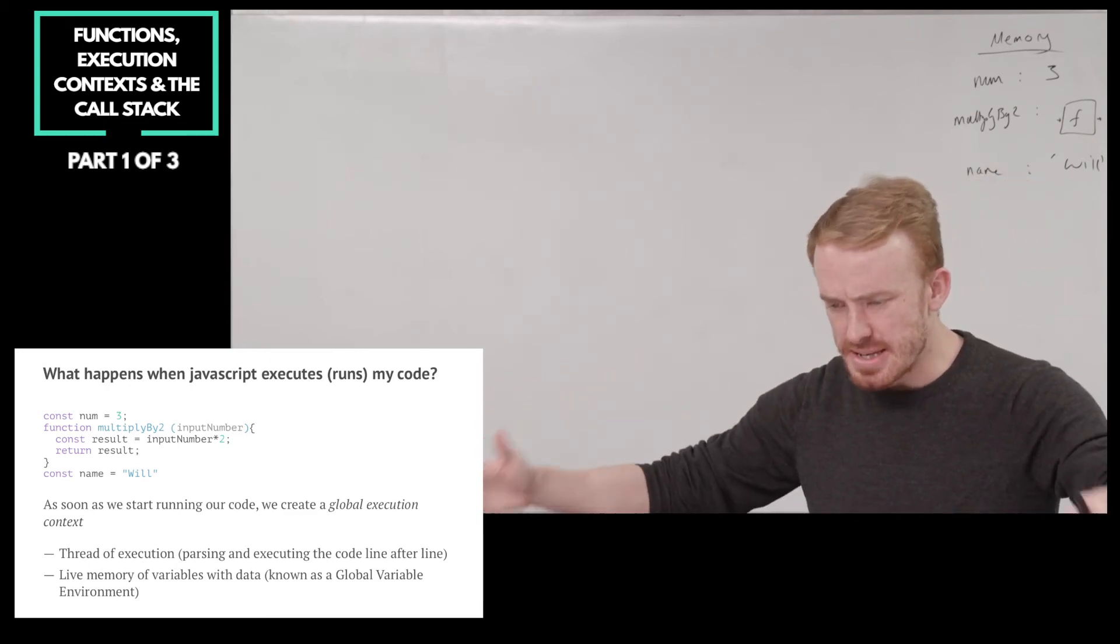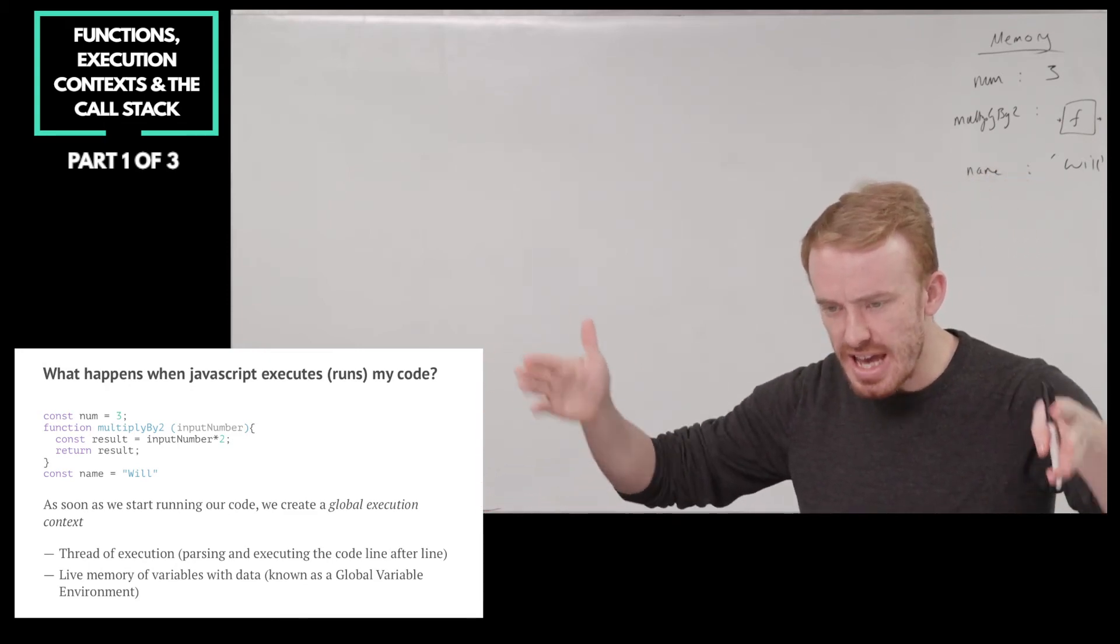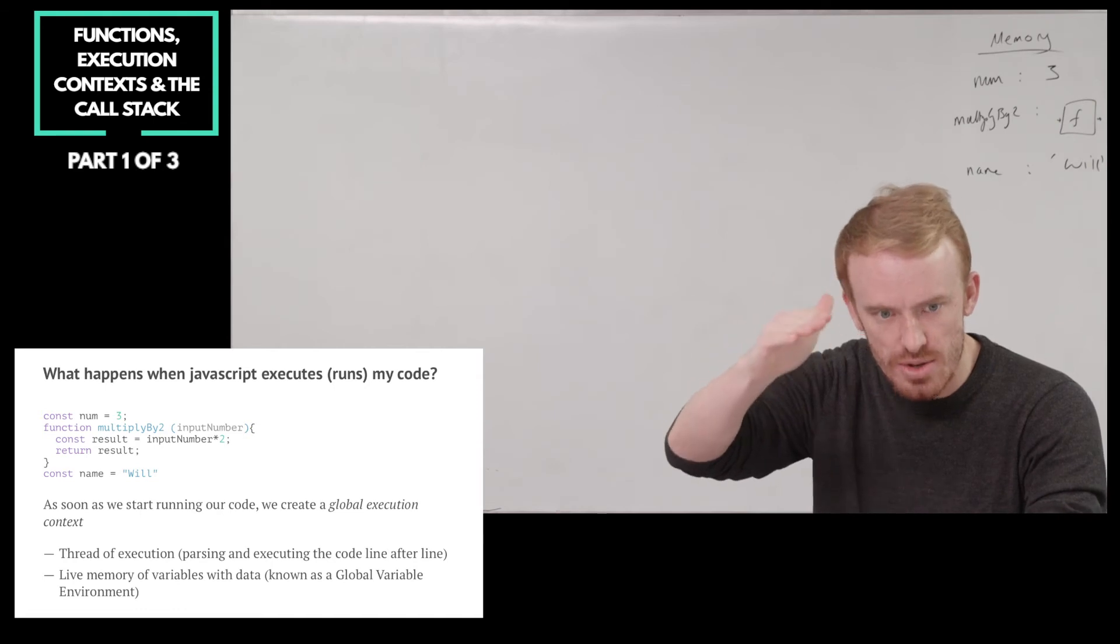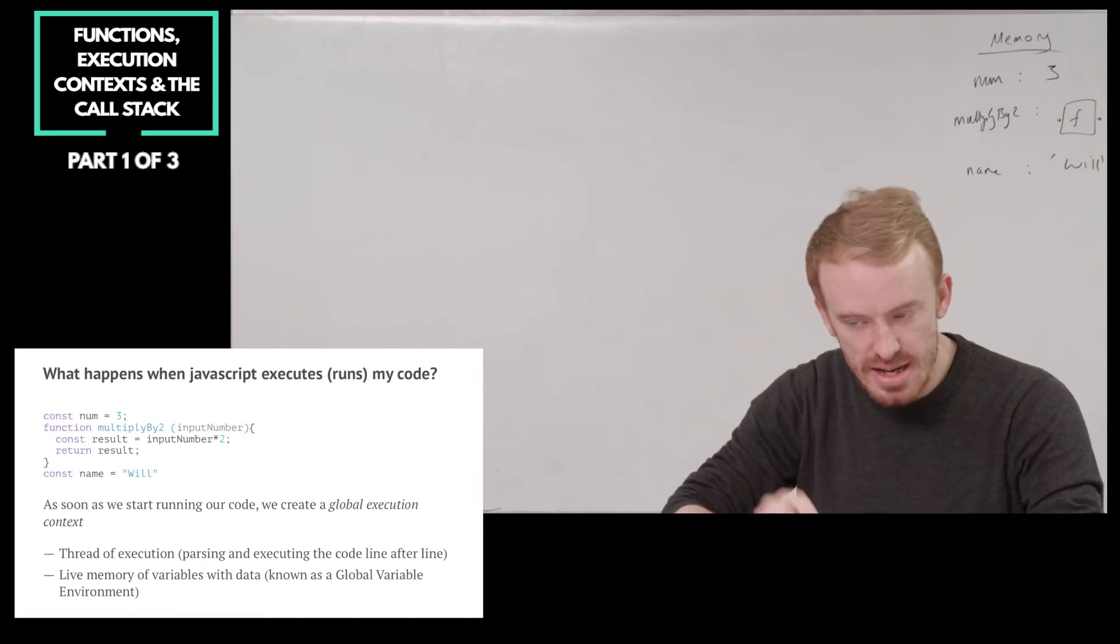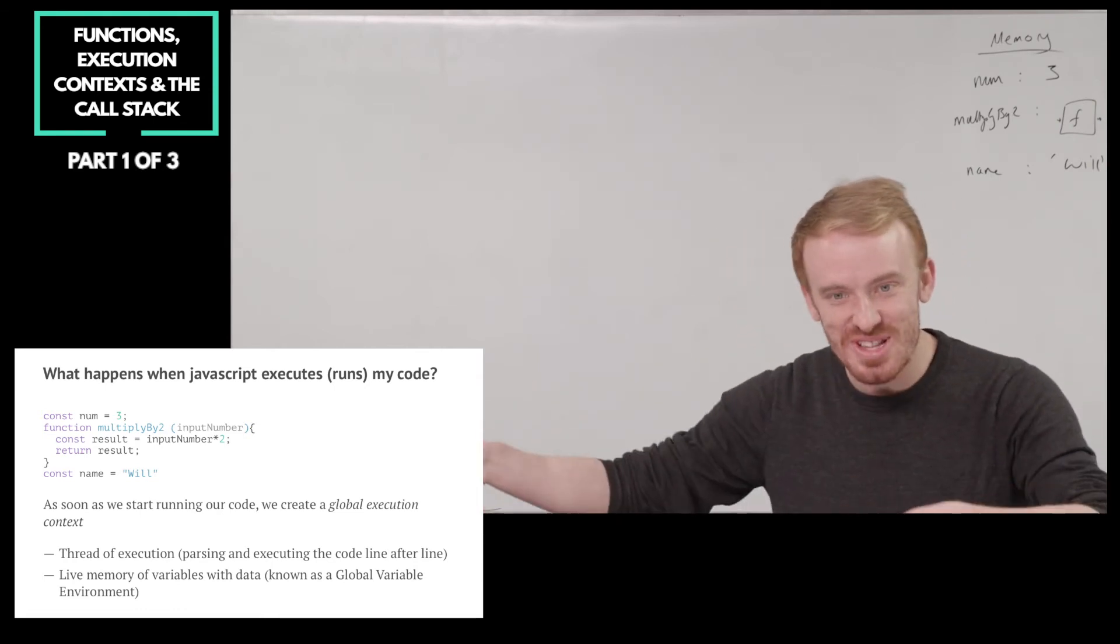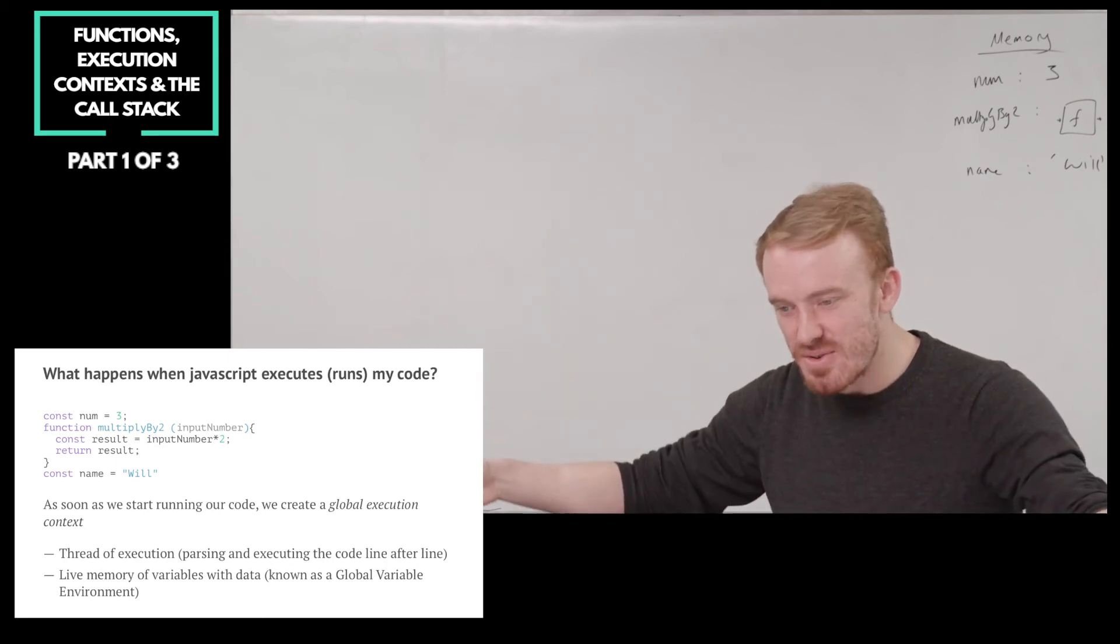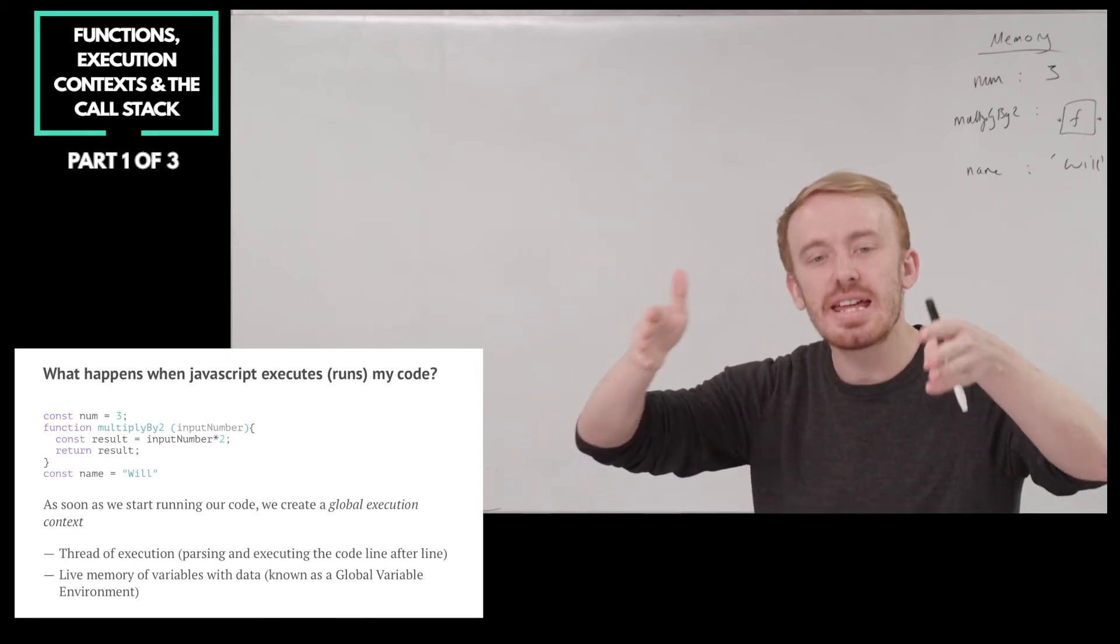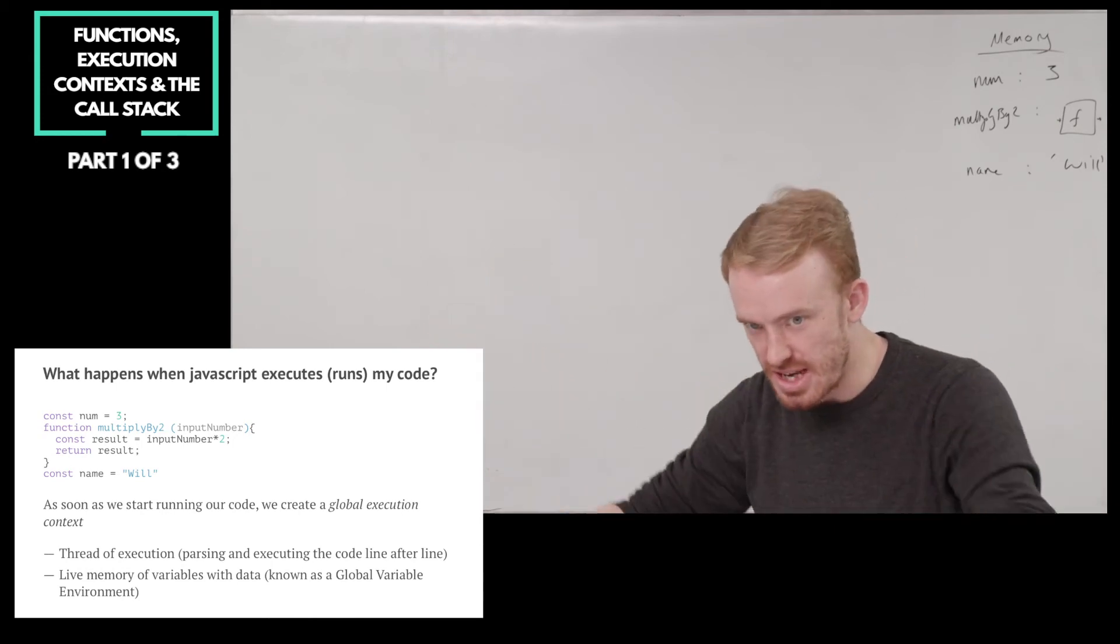Those two things together are known as an execution context. A context means like a space, a space in which to execute our code. And in order to execute our code, we need the thread of execution that goes through the code and takes it line by line, and then a memory in which to store that stuff. And those two together are known as a context in which we execute our code, a space in which we execute, an execution context.